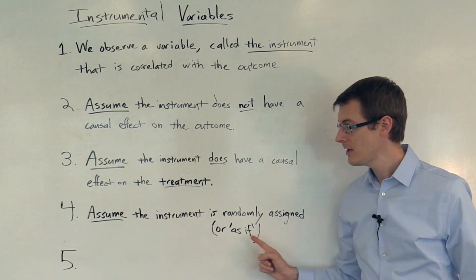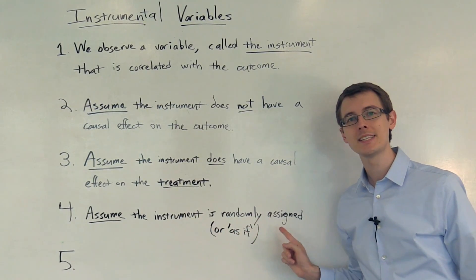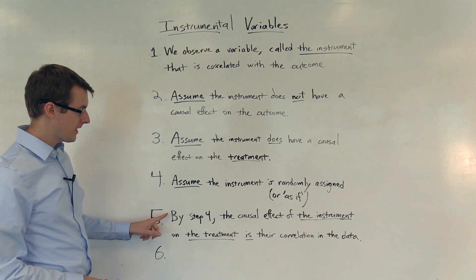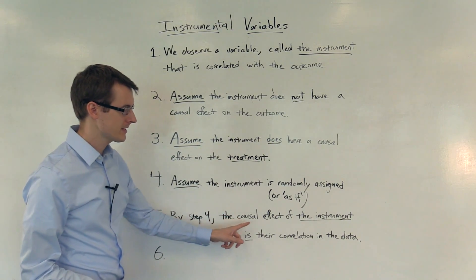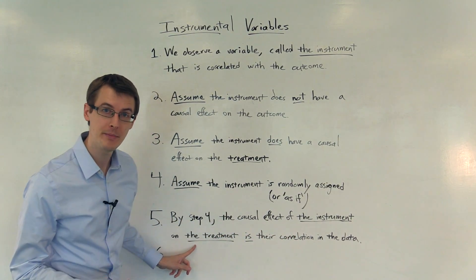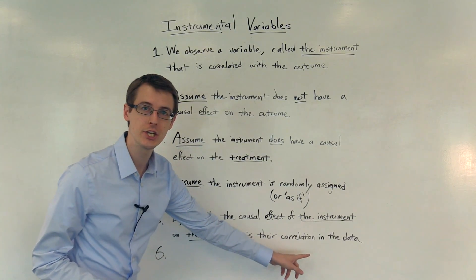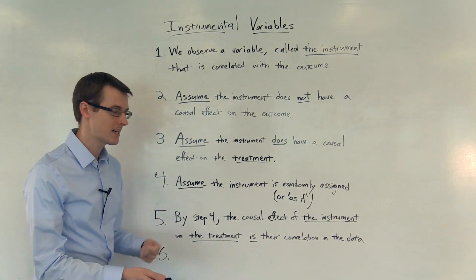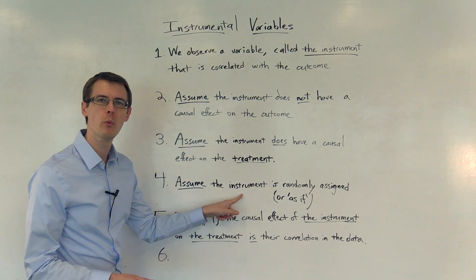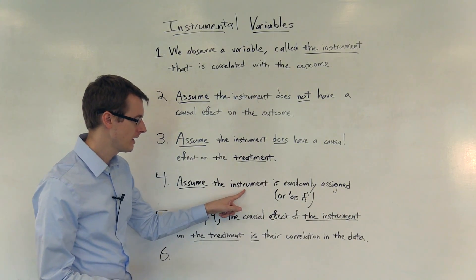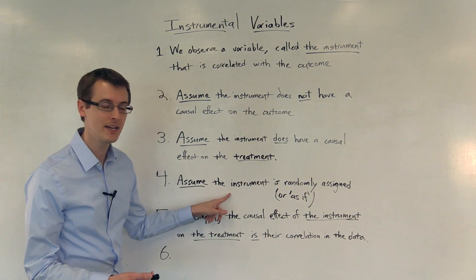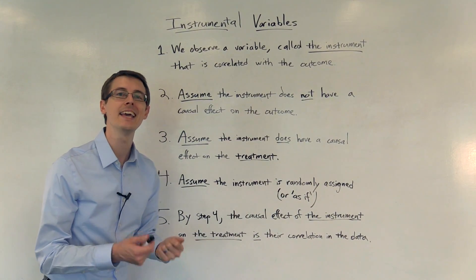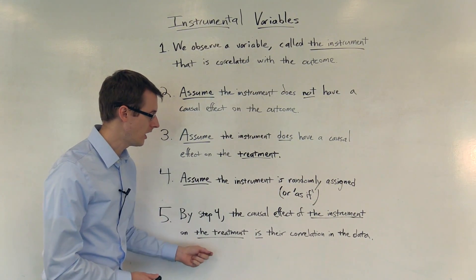Step 4: We assume that the instrument is randomly assigned to units, or as if randomly assigned. Step 5: Because of Step 4, the causal effect of the instrument on the treatment variable is their correlation in the data. Here we're thinking of a new randomized experiment where I randomly assign the instrument to people, and I want to know the causal effect of the instrument on the treatment variable. Because it's randomly assigned, whatever correlation I see between the instrument and the treatment in the data is the causal effect of the instrument on the treatment.